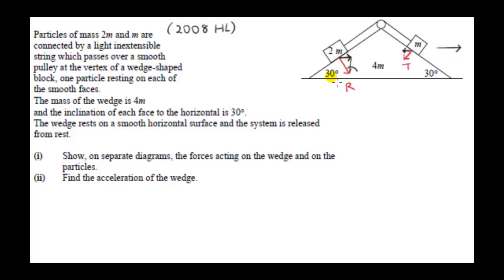We know from before that the angle in here is the same as the 30-degree angle of the incline, because we have a pair of lines perpendicular to the other pair, so these angles are the same — another 30 degrees. So this horizontal component has magnitude R sin 30, and similarly, over here, the horizontal component has magnitude T sin 30.